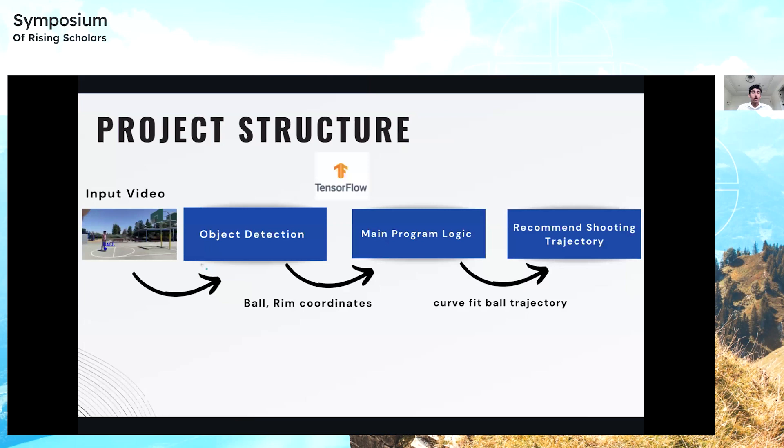Just an overview of my project structure. I started with the input video, then moved to object detection where I used the TensorFlow library to identify the ball and rim coordinates. Then I moved to the main program logic where my algorithm curve fit the ball trajectory to create the graphs. Finally, an automated feedback system would recommend the optimum shooting angle for the player.